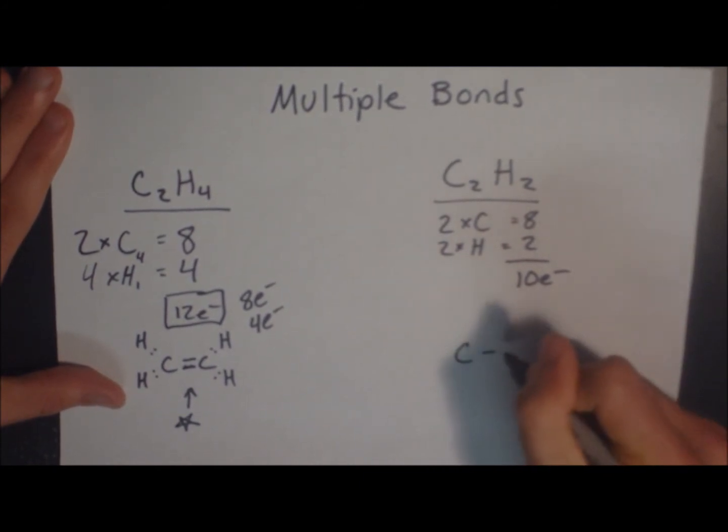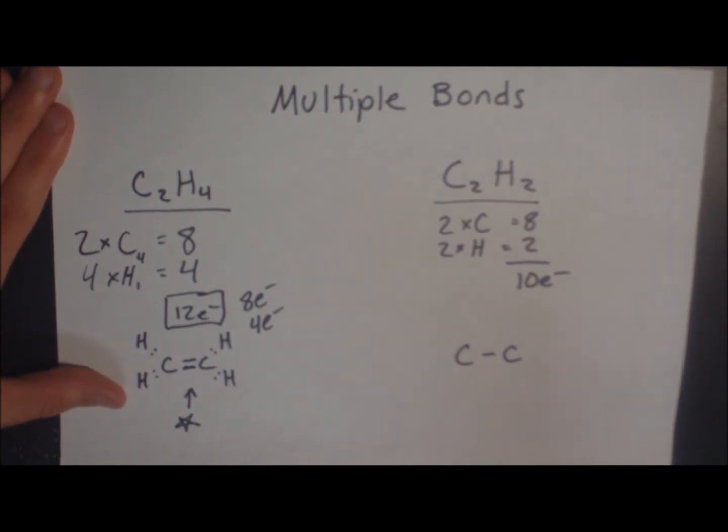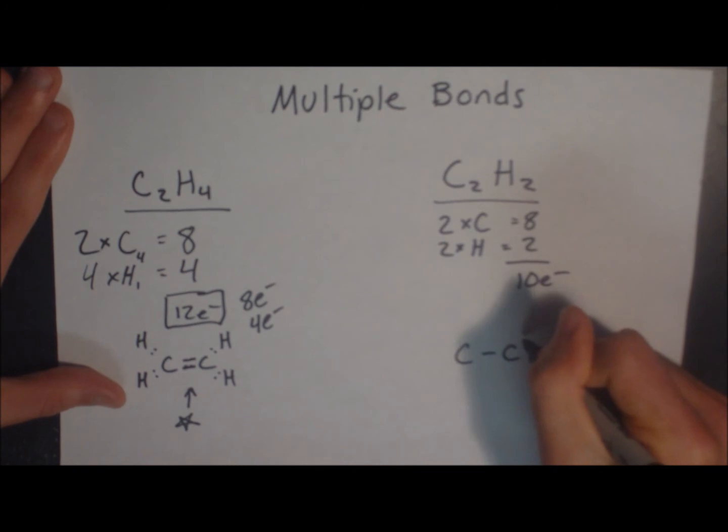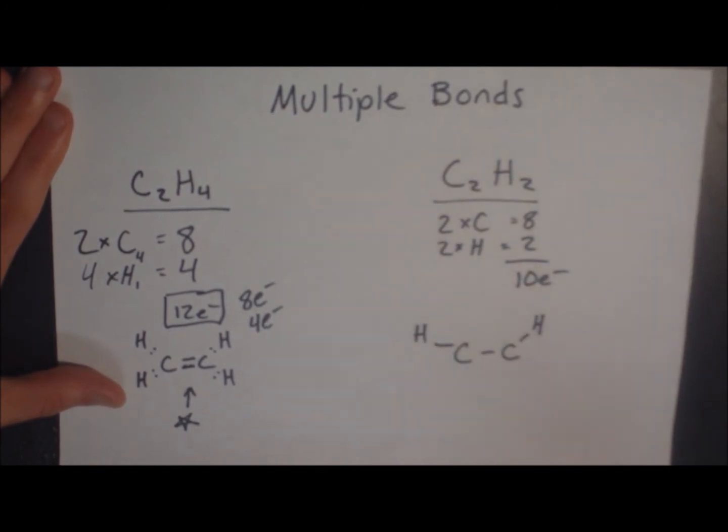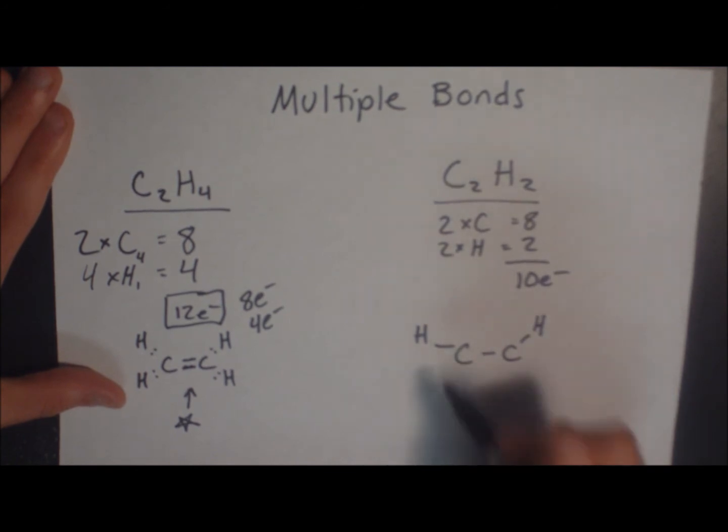Again, we're going to draw our basic skeleton. I drew a carbon bond, because we have to have one. Also, each one will have 1 hydrogen bond. Each solid line means 2 electrons. So our hydrogen rule is satisfied.